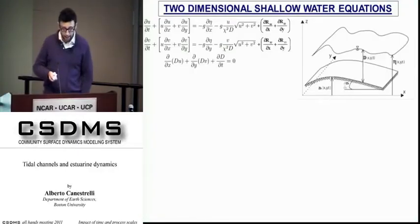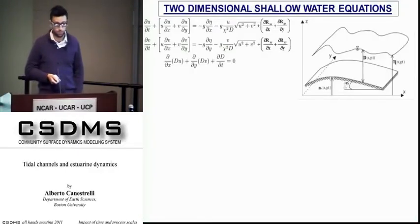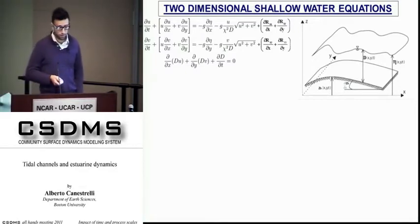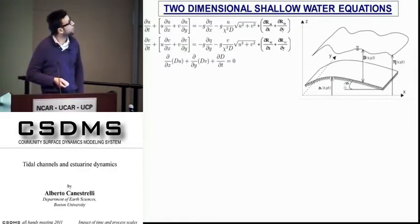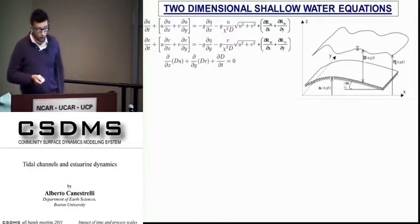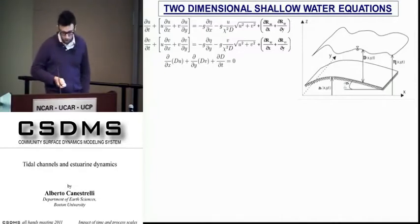If vertical stratification is important, we usually use a 3D model. If the water is vertically well mixed, we usually use a two-dimensional model, meaning that the three-dimensional equations are vertically averaged, and the model provides vertically averaged quantities as a result. These are the classical two-dimensional shallow water equations. The first two are the momentum equations along X and Y, while the third equation is the continuity equation.